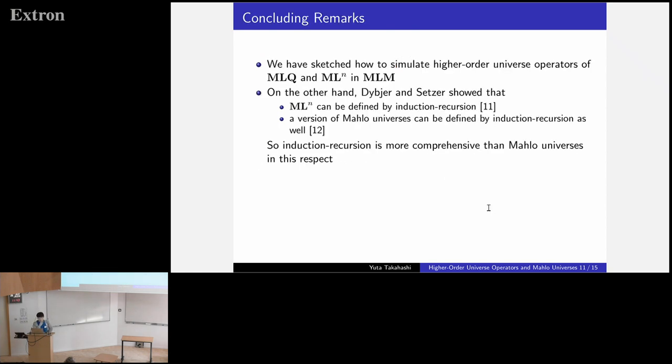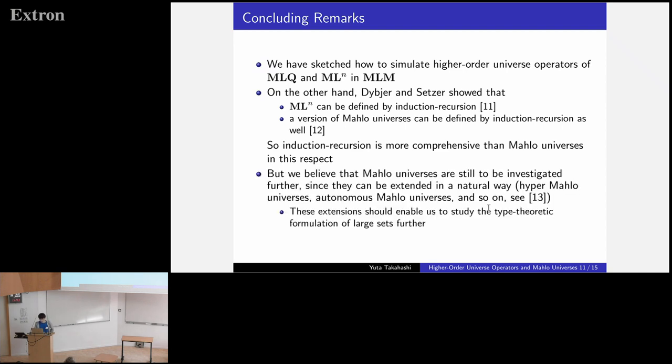So, let me conclude. We have sketched how to simulate higher order universe operators of MLQ and MLN in MLM. On the other hand, Dybjer and Setzer show that MLN can be defined by induction recursion, and a version of Mahlo universes can be defined by induction recursion as well. So, induction recursion is more comprehensive than Mahlo universes in this respect. But we believe that Mahlo universes are still to be investigated further since they can be extended in a natural way, such as hyper-Mahlo universes, autonomous Mahlo universes, and so on. So, these extensions should enable us to study the type theoretic formulation of large sets further.